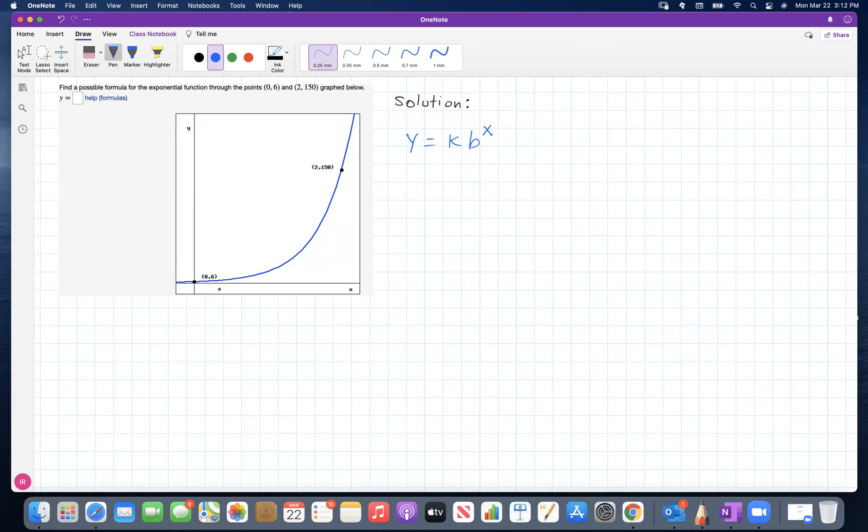Now, this point (0,6) belongs to the graph, which means I can substitute x for 0 and y for 6 into this formula. What I should get is a true statement when x is 0.